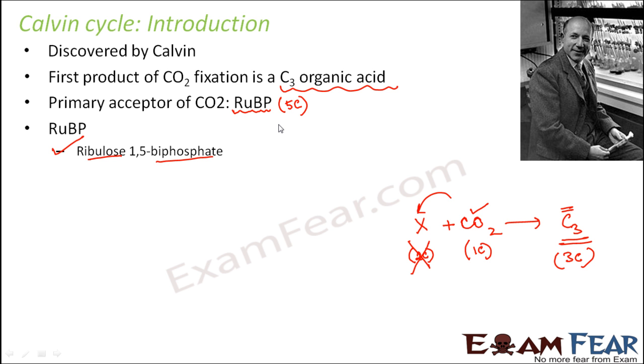Now we will talk about the entire Calvin cycle in detail and we will also talk about how a 3-carbon compound is formed. So this is a 5-carbon ketose sugar with 5 carbon atoms and a ketose group.